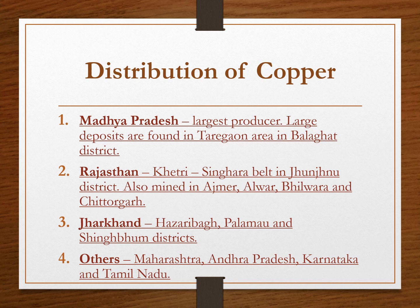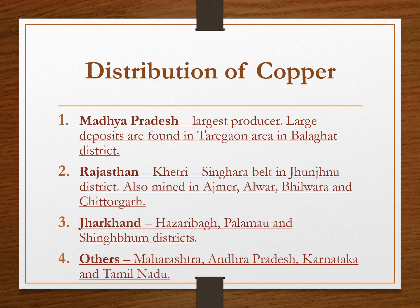In Rajasthan, copper is found at the Khatri-Singhara belt in Jhunjhunu district and is also mined in Ajmer, Alwar, Bhilwara, and Chittorgarh. Jharkhand is the third largest producer of copper in the country and copper is mined in Hazaribagh, Palamu, and Singhbhum districts. Other minor producers are Maharashtra, Andhra Pradesh, Karnataka, and Tamil Nadu.